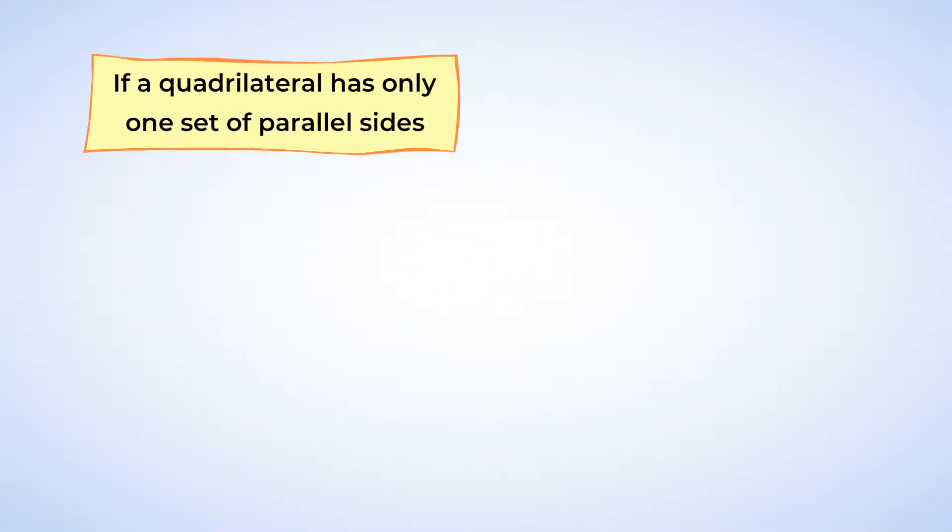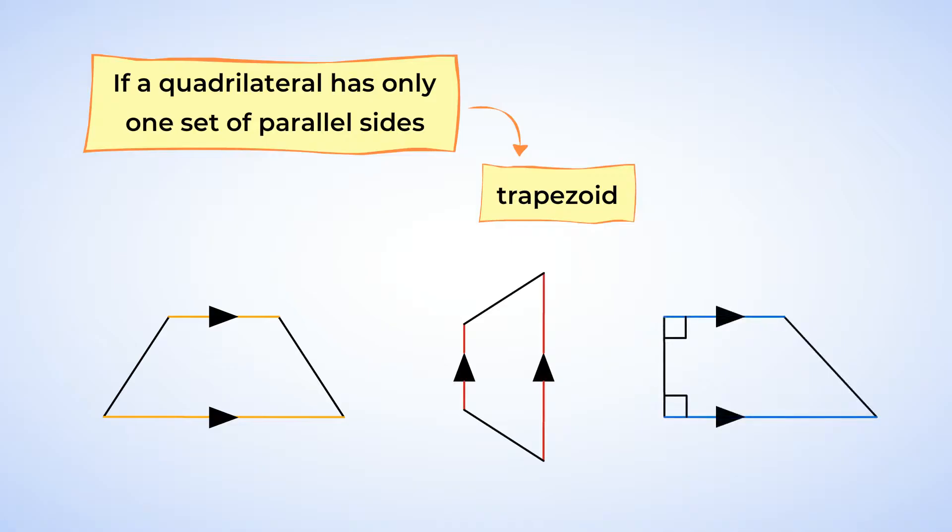If a quadrilateral has only one set of parallel sides, then it's called a trapezoid. Usually the top and bottom sides are parallel, but it can also be the left and right sides. Look at that trapezoid. It has one side that's perpendicular to the parallel sides, and it has right angles, too. What do you say we practice with some riddles?